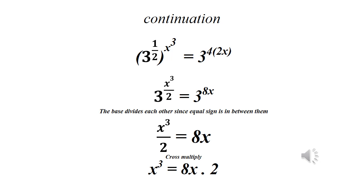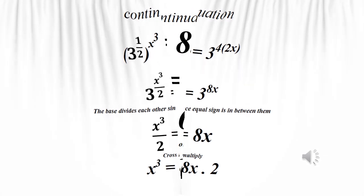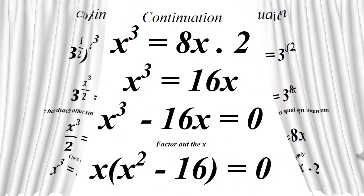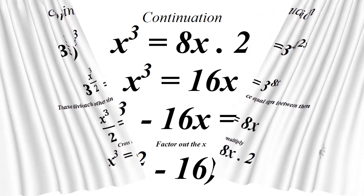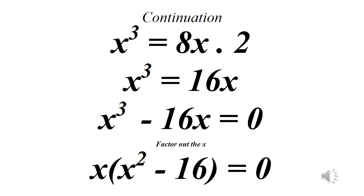Since the bases are equal we equate the powers: x raised to power 3 over 2 equals 8x. Cross-multiplying gives x raised to power 3 equals 16x. Collecting like terms: x cubed minus 16x equals 0. Factoring out x: x times bracket x squared minus 16 equals 0.